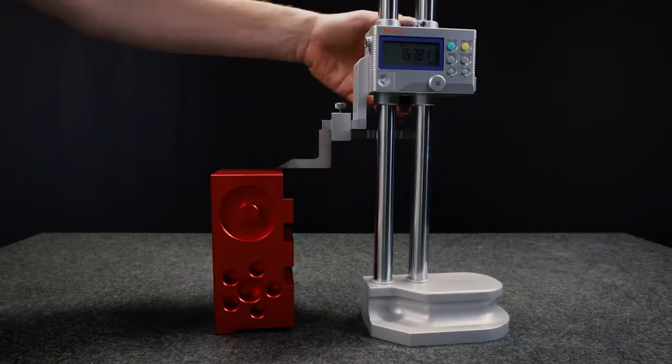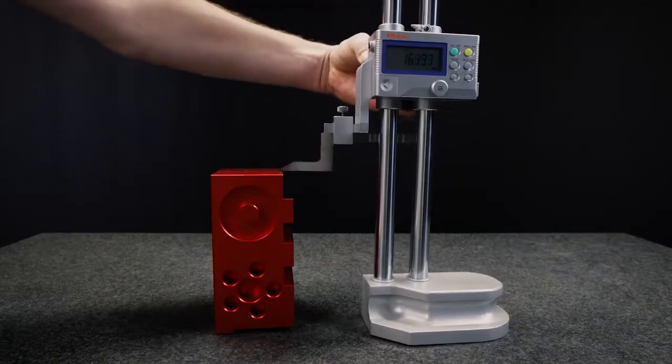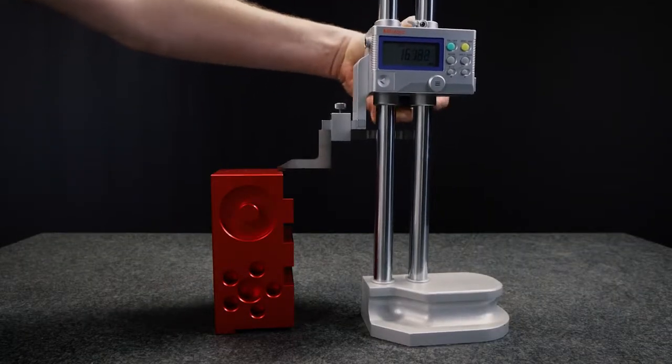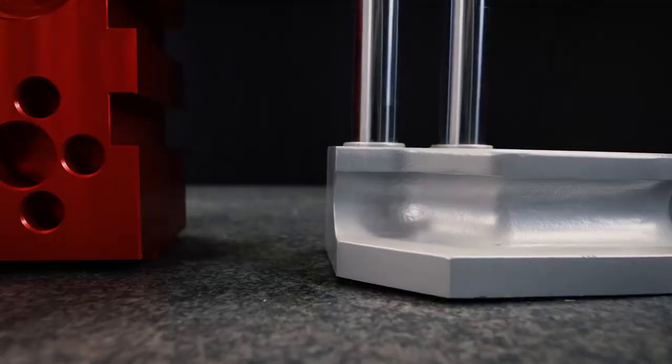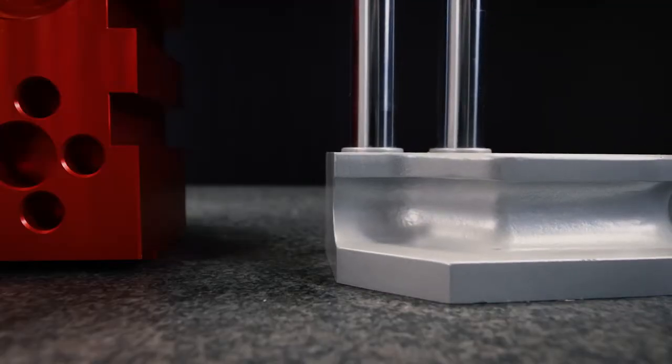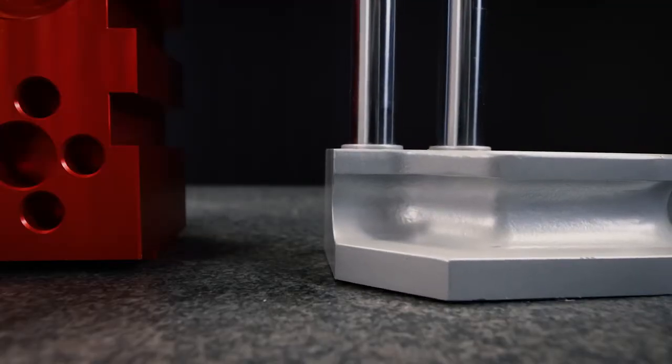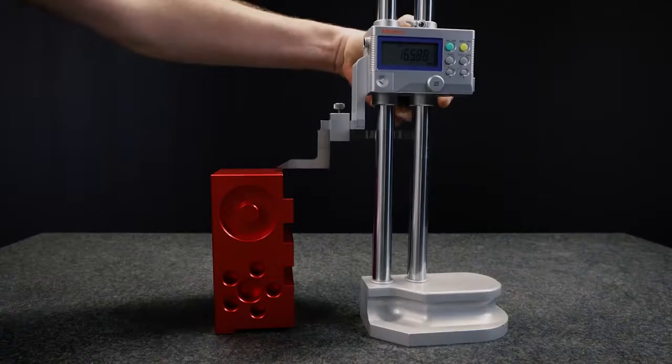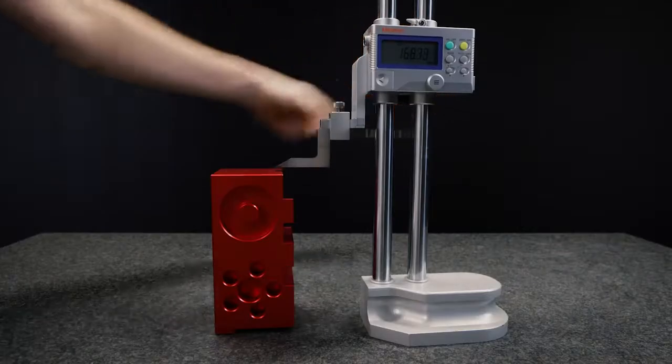When setting the scriber height from a gauge block stack or from a workpiece feature, the base may lift from the surface plate if excessive downward force is used on the slider. This then results in measurement error.